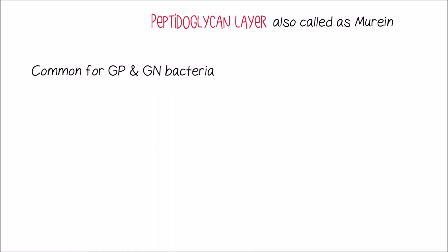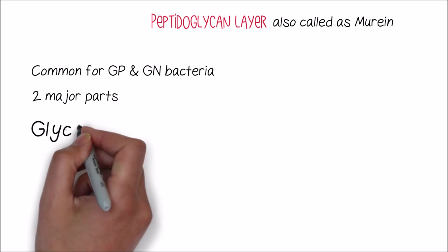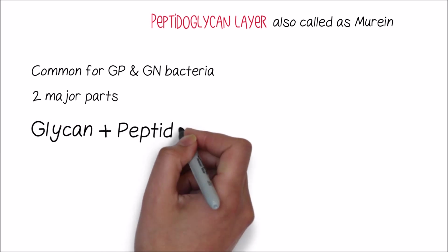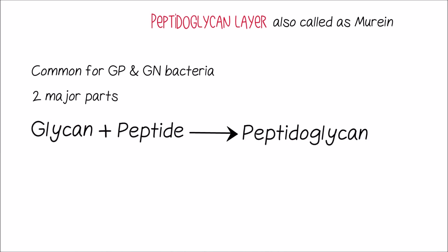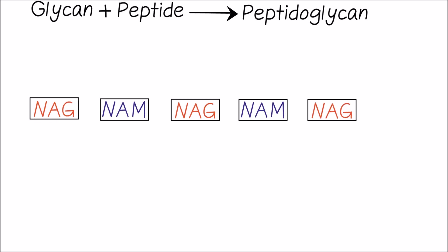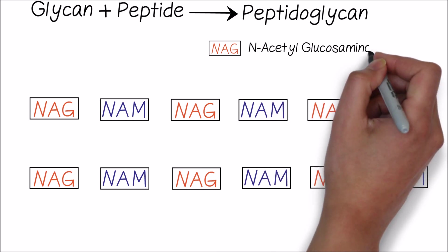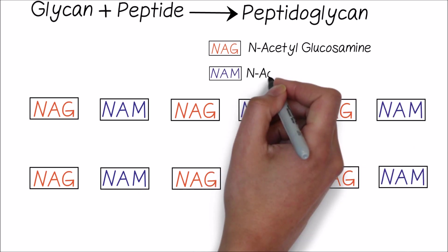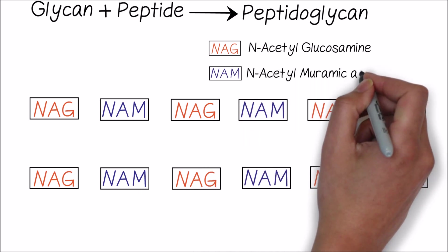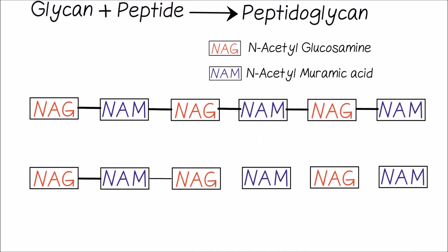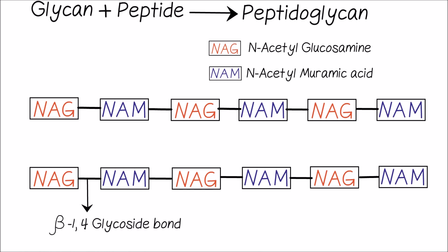Peptidoglycan is composed of two major parts: the glycan portion and the peptide portion. The glycan portion forms the backbone and is composed of N-acetylglucosamine and N-acetylmuramic acid. These two sugars are bound by a beta-1,4-glycoside bond.